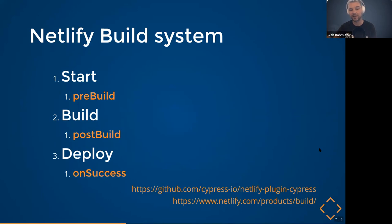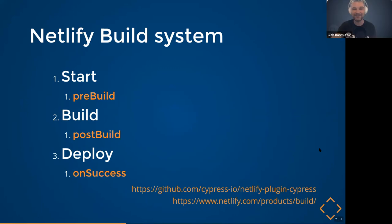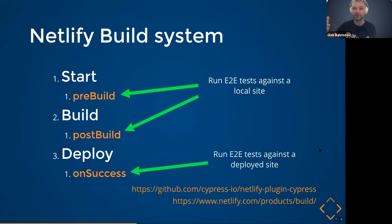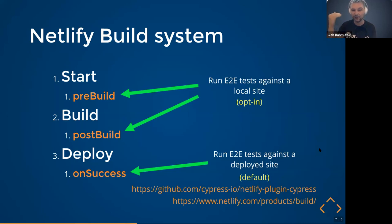The cool thing is we can run end-to-end tests at those steps. Before deploy, your site is still local running at localhost. After deploy, you get a full URL — the preview URL or production URL — and you can run end-to-end tests against the fully deployed system. Our plugin right now runs end-to-end tests against the deployed site by default. But you can still opt into running tests before you build, after you build but before deploy. Let's see how it looks.